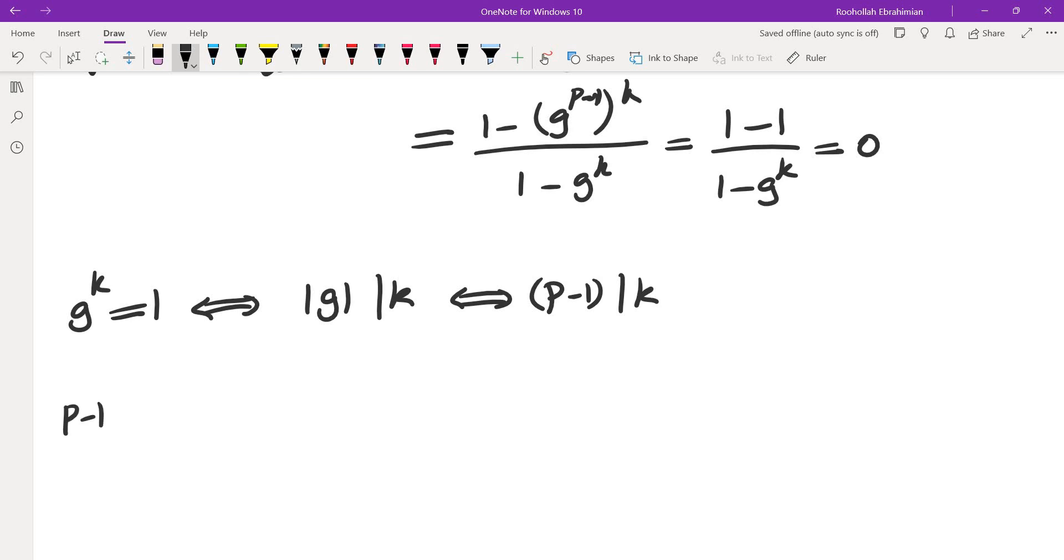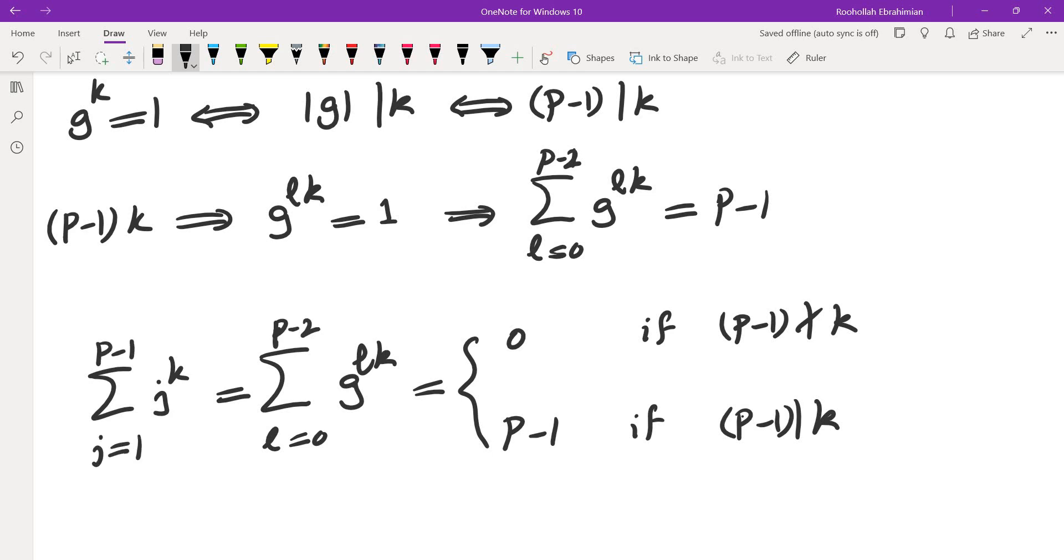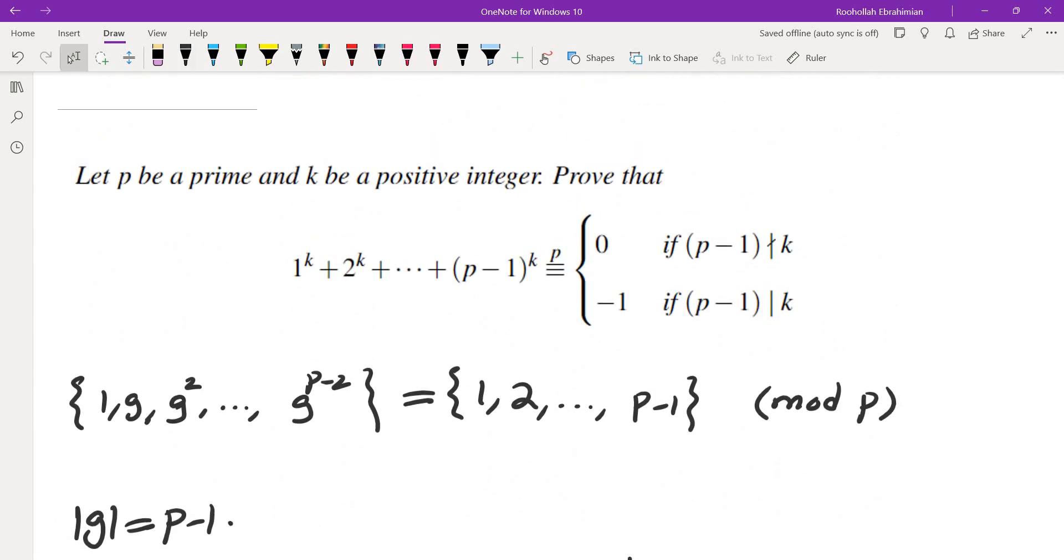Now what happens if (p-1) divides k? If (p-1) divides k, then g^(lk) is always just 1, which means the sum of g^(lk) for l from 0 to p-2 equals p-1 since all terms are 1. This gives us that the sum of j^k is 0 or p-1 if (p-1) does not divide k or if (p-1) divides k, where l ranges from 0 to p-2 and j ranges from 1 to p-1, which is exactly what we wanted to prove.